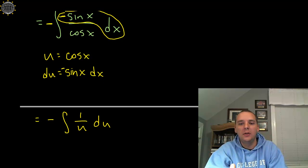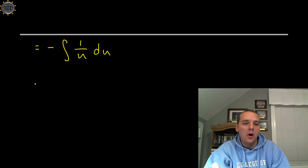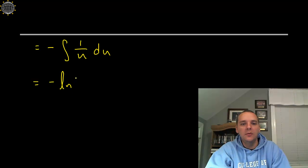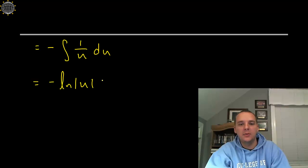Alright, now we're almost home free. Just tidy up some details. Integral of one over u would be the natural log of the absolute value of u. Let's not forget that absolute value symbol, plus C.